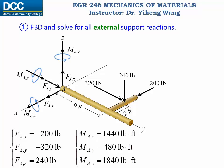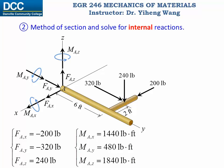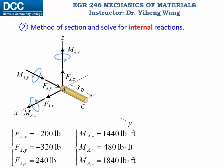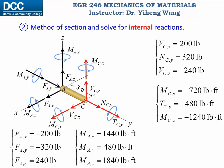The next step is to apply the method of sections, section this member at point C, and solve for all the internal reactions at point C. With the member sectioned, we choose the left hand side for our analysis, draw all six internal reactions, and through equilibrium we can solve for all six internal reactions.